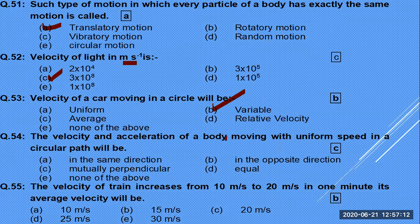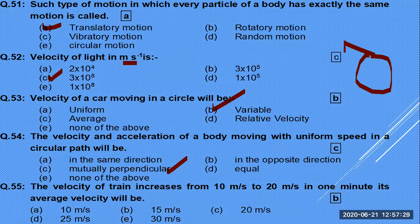The velocity and acceleration of a body moving with uniform speed in a circular path are mutually perpendicular. If we draw a circle, the velocity direction is tangential and the acceleration direction is toward the center — they are perpendicular to each other.